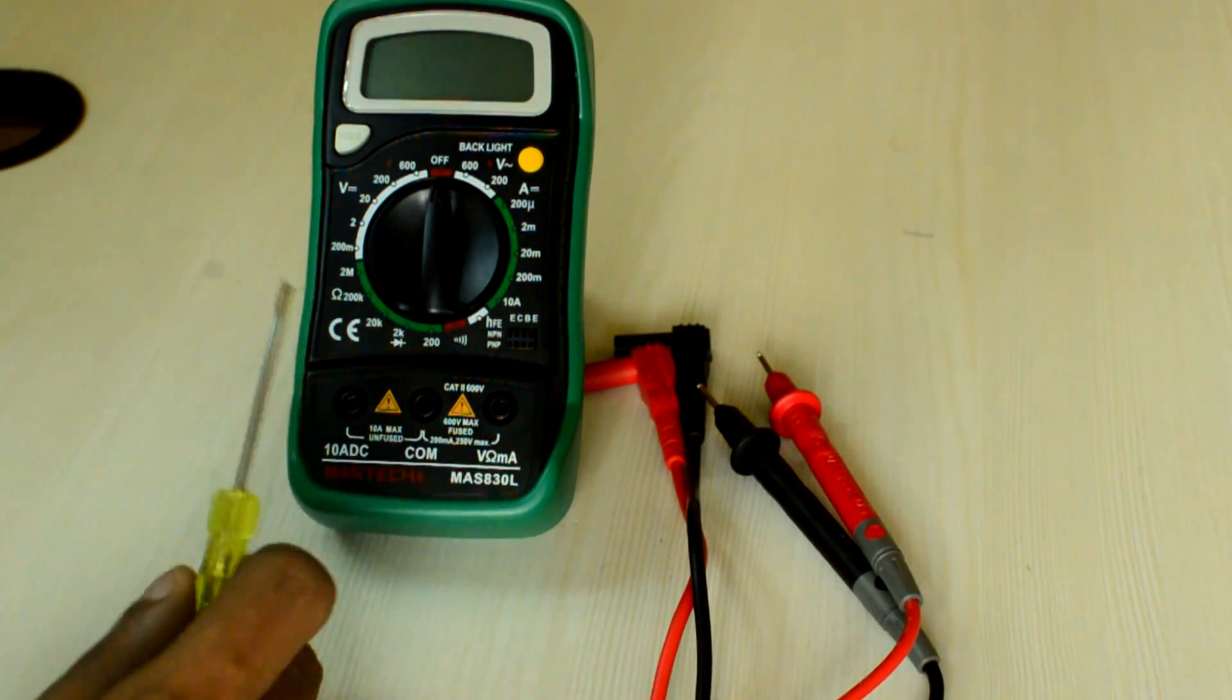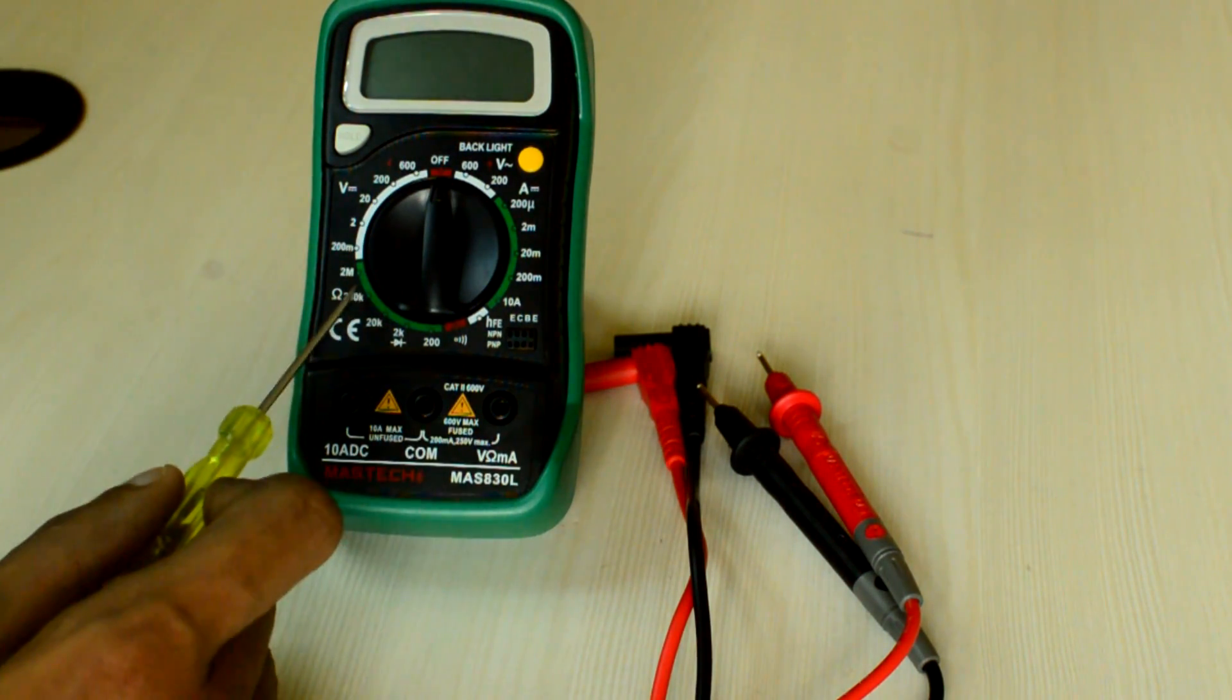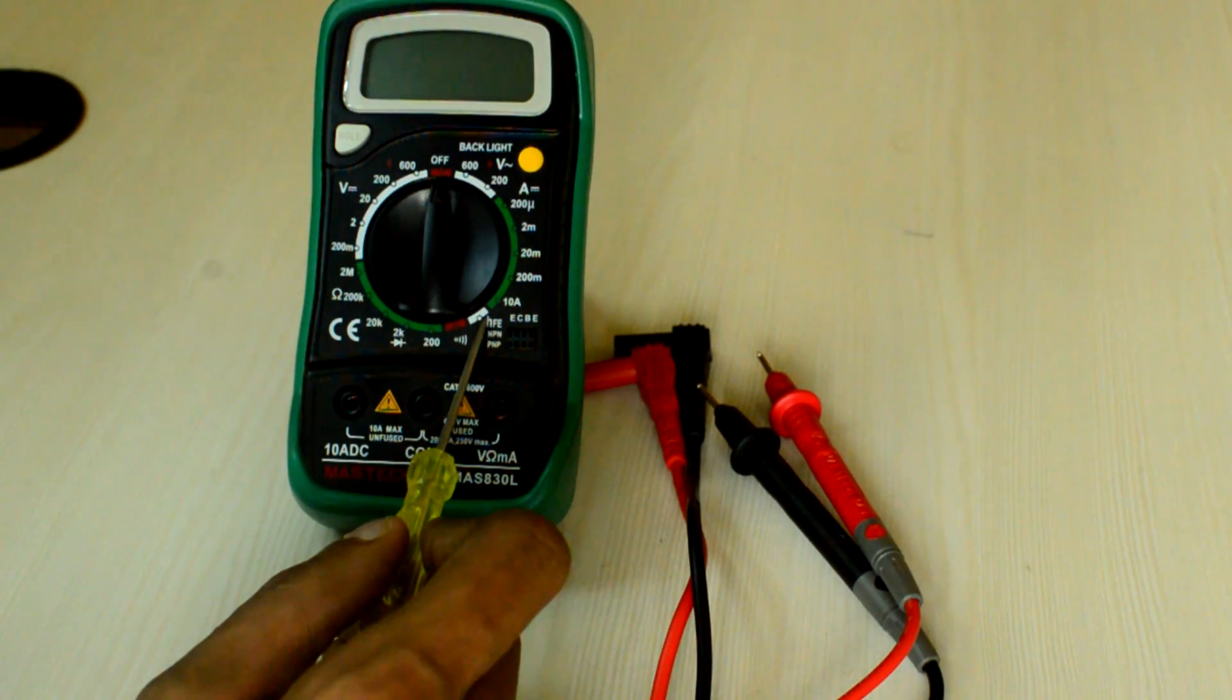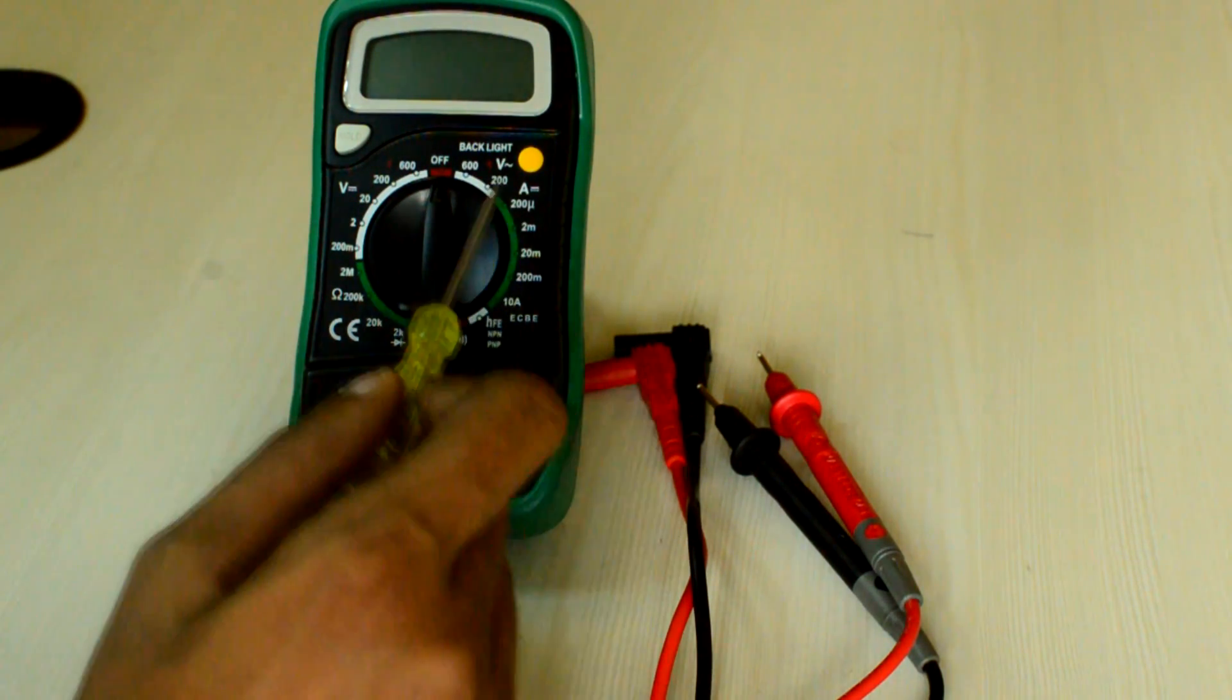As you can see, the DMM can be used to measure DC voltage, resistance, continuity, HFE of transistor, DC current or AC voltage.